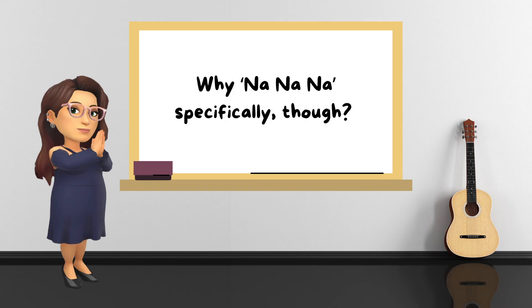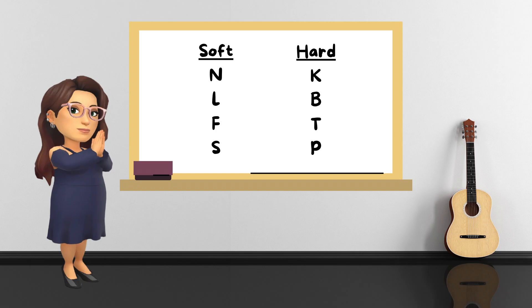Let's also talk about the use of na-na-na specifically. Why not ba-ba-ba or ka-ka-ka? Well, na uses a soft consonant, as does la, which is also regularly used in pop. Hard consonants such as ba or ka require more effort to deliver repetitiously at speed. Try saying na-na-na really fast, na-na-na-na-na-na-na-na, and then try ka-ka-ka-ka-ka-ka-ka-ka. It's possible, but it takes a lot more energy and often doesn't sound as satisfying.